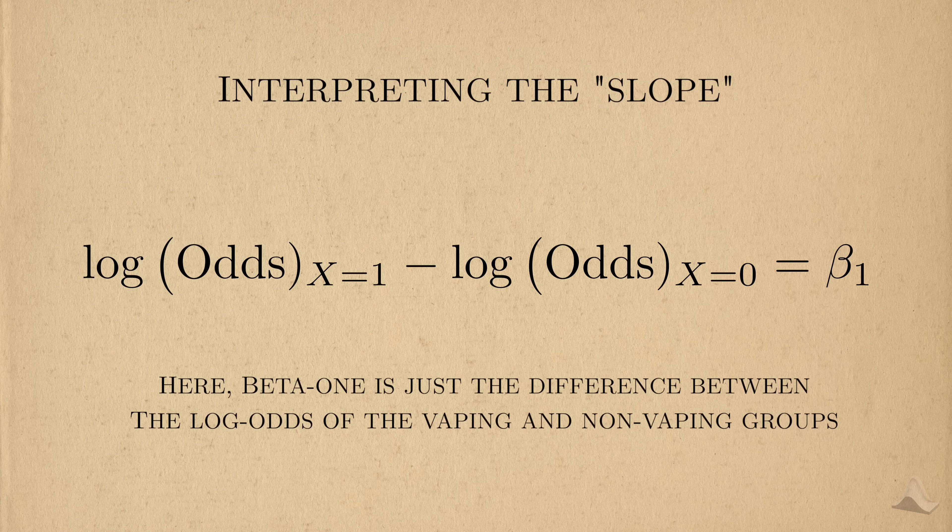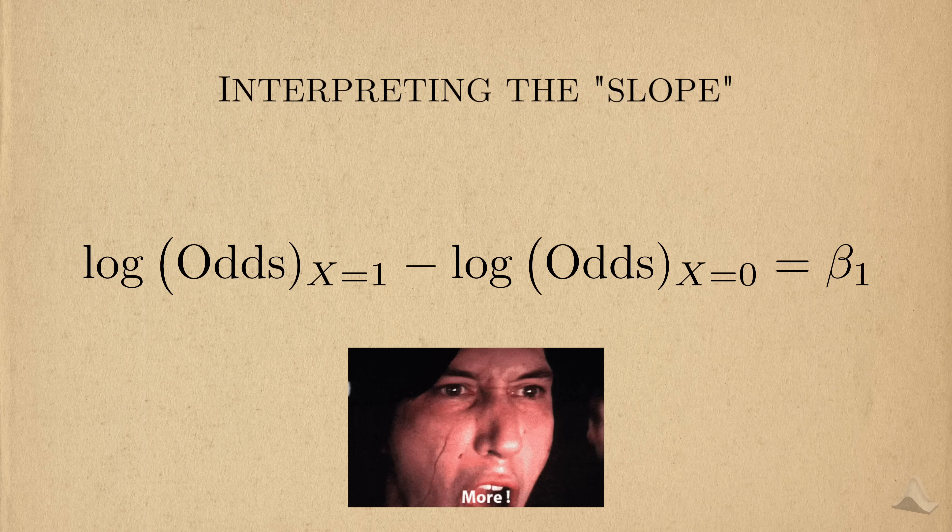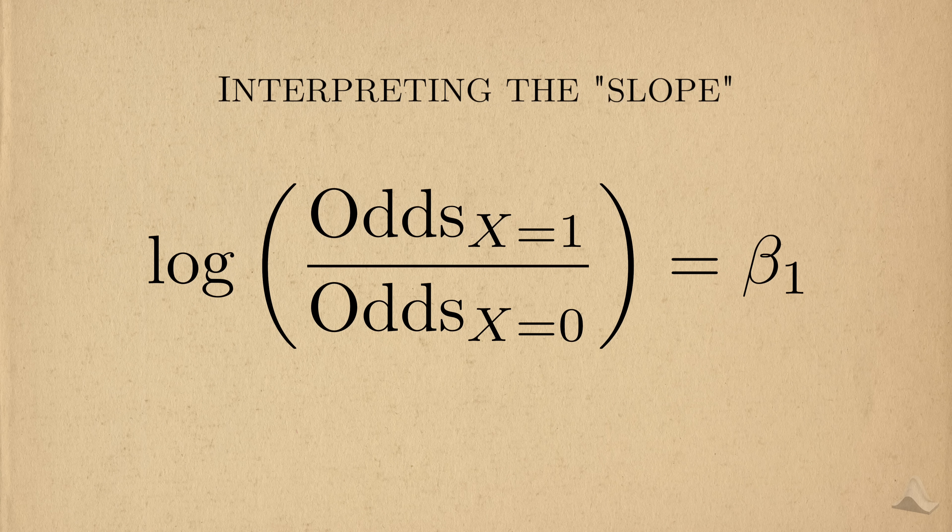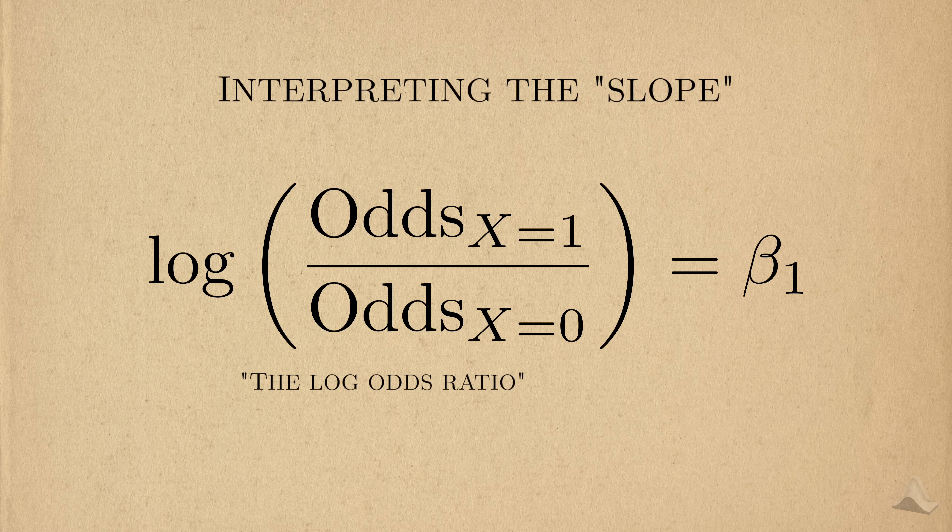From there, we can see that beta 1 is just the difference between the log odds of the vaping group and the log odds of the non-vaping group. We can go further. Since we're subtracting logarithms, we can simplify this into a single log, but now the inside is an odds ratio.